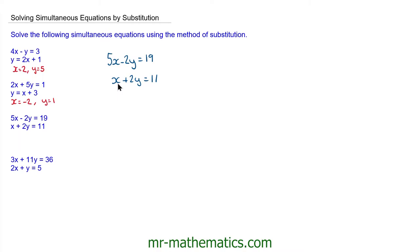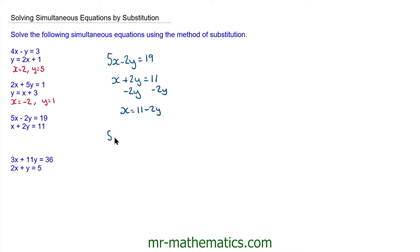Okay, welcome back if you had a go. In this question, before I can substitute this value of x into the other equation, I need to make x the subject of this equation. To do this, I'll take 2y from both sides, so x is equal to 11 minus 2y. Now I can substitute this expression for x into here. So we have 5 lots of x, which is 11 minus 2y, minus 2y, to make 19.